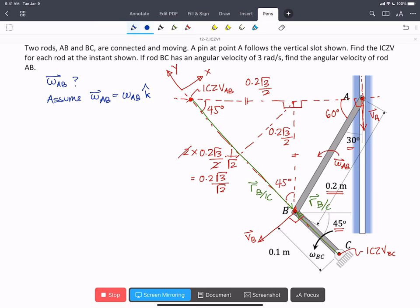So what we're going to do to solve it is we're going to write the equation for the velocity of point B in two ways. We're going to write it with respect to C. And we're going to write it with respect to the IC for AB. So we'll start with the first one.